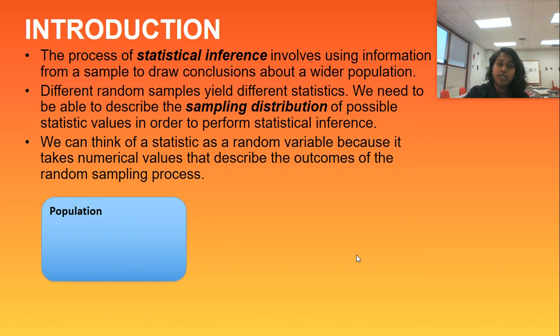The process of statistical inference involves using information from a sample to draw conclusions about a wider population. Different random samples yield different statistics. We need to be able to describe the sampling distribution of possible statistic values in order to perform statistical inference. We think of a statistic as a random variable because it takes numeric values that describe the outcomes of the random sampling process.